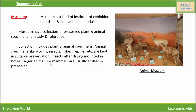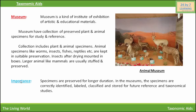Large animals like mammals are usually stuffed and preserved. The importance of museums is that specimens are preserved for longer durations. The specimens are correctly identified, labeled, classified, and stored for future reference and taxonomical studies.